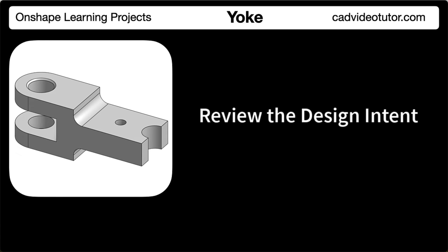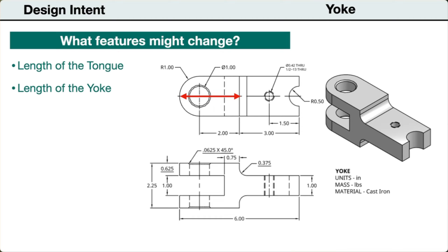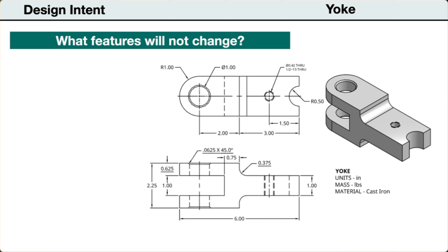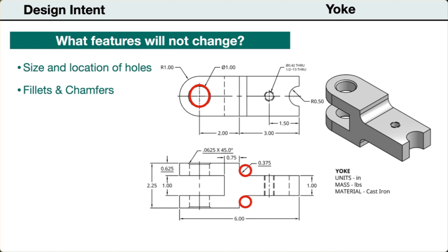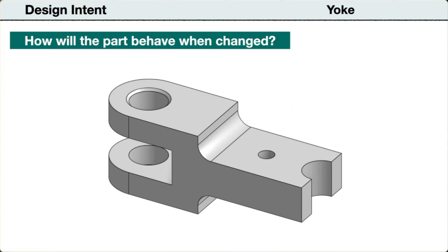Next, let's establish our design intent. To start, we need to identify any features that might be changed during the design process. The length of the tongue end of the part may need to be increased. Also, the length of the yoke end may need to be increased as well. The width of the part may need to be bigger. Next, let's consider the features that should not be changed when the part is revised. The size and specifications of the holes should remain unchanged. The size and location of the fillets and chamfers will not change. The height of each end of the part will remain the same. The part should maintain its symmetry. So, if we are able to apply constraints to the model that will make it responsive to these changes.